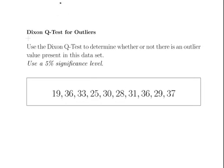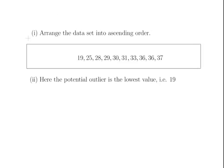There are a couple of steps to this. The first thing we will do is we will arrange the dataset into ascending order first off. So, there we are: 19, 25 and so on all the way up to 37.